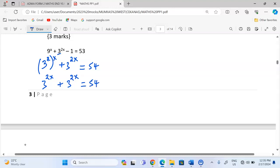Then at this now, because 3 power 2x is appearing twice, we can let it be a certain known. Call it t.